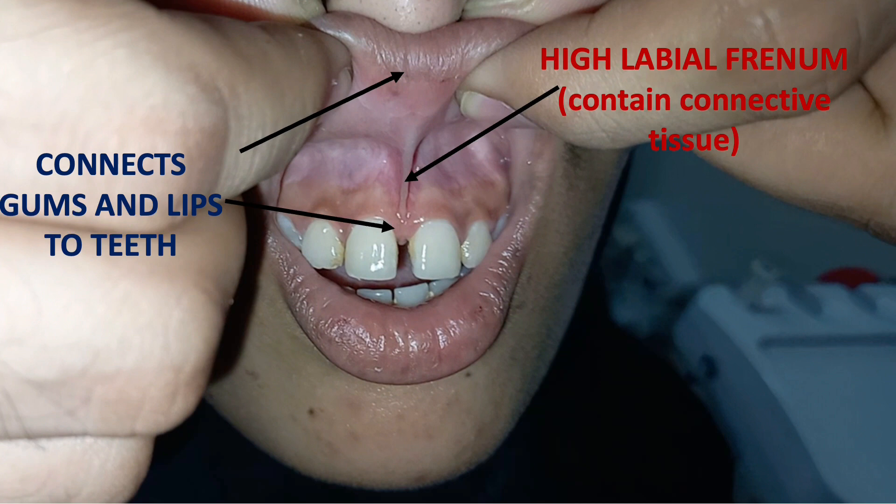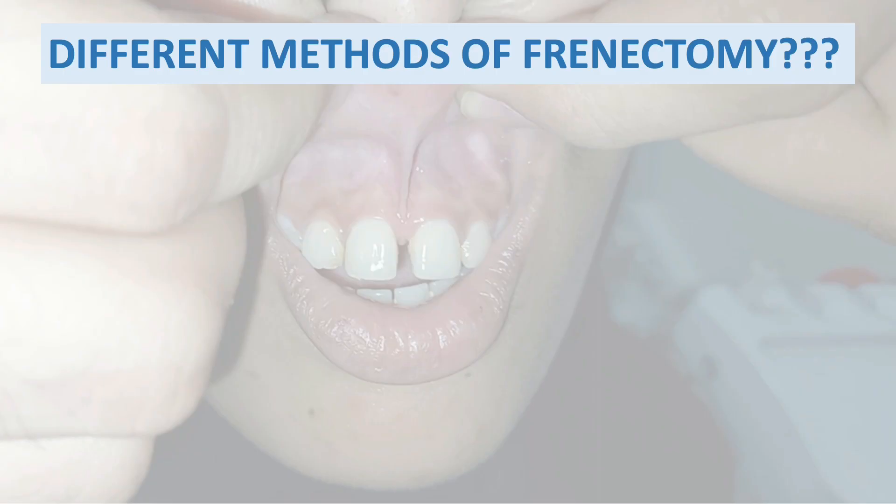This is what we call frenectomy. If this frenum is high, it will continuously exert pressure on the gums and teeth and lead to dental problems. This is why there is a need to remove the frenum in high frenum cases.